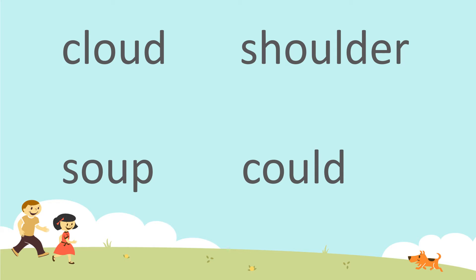There are four different words that have the OU in them. The first one — cloud, c-l-ow-d — uses the OU to make an OW sound, which is brilliant. The next one, sh-ow-lder, shoulder, doesn't seem quite right. So that OU isn't being used as an OW. In this case, it's being used as an O — shoulder. So we could have it as an OW, or we could have it as an O.